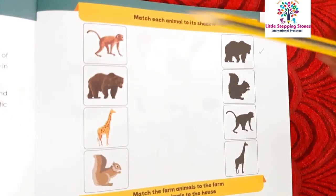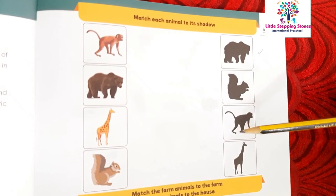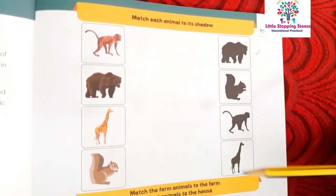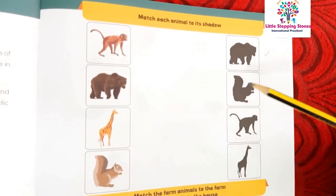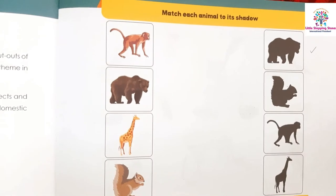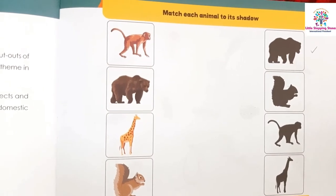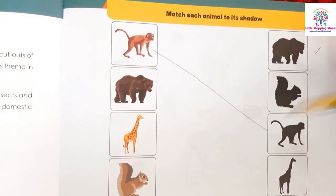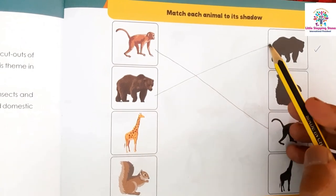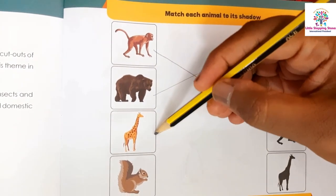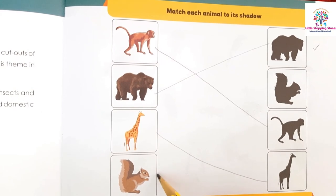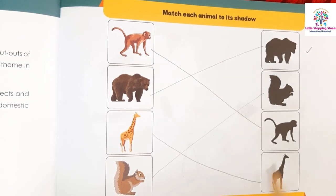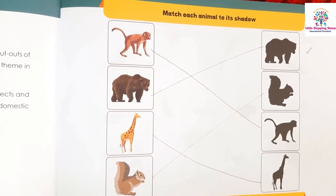Shall we repeat it again? Monkey — here is the shadow. Bear — here is the shadow. Giraffe — here is the shadow. Squirrel — here is the shadow. Now you should do the same in your book. Okay.